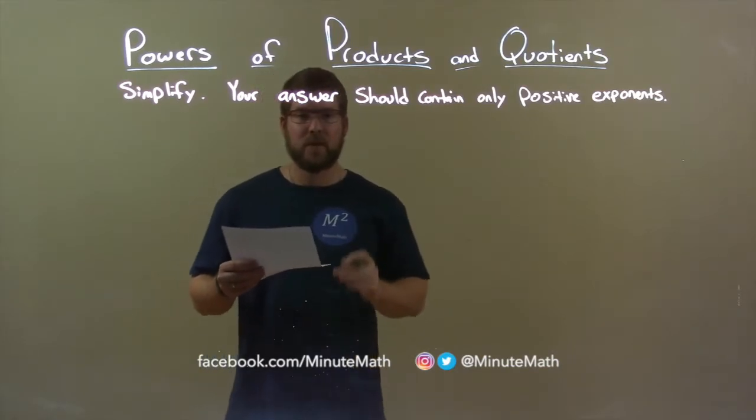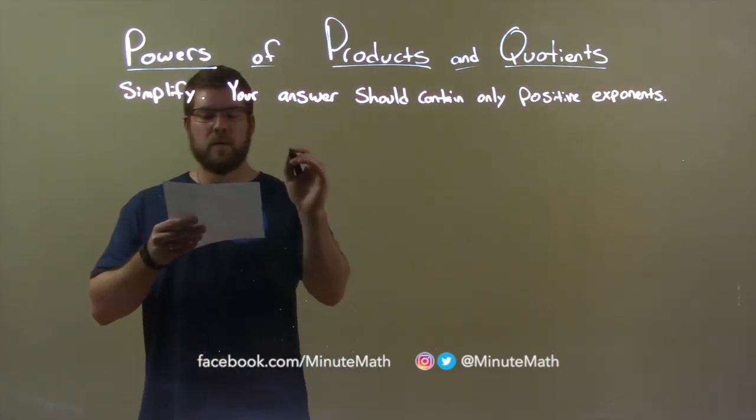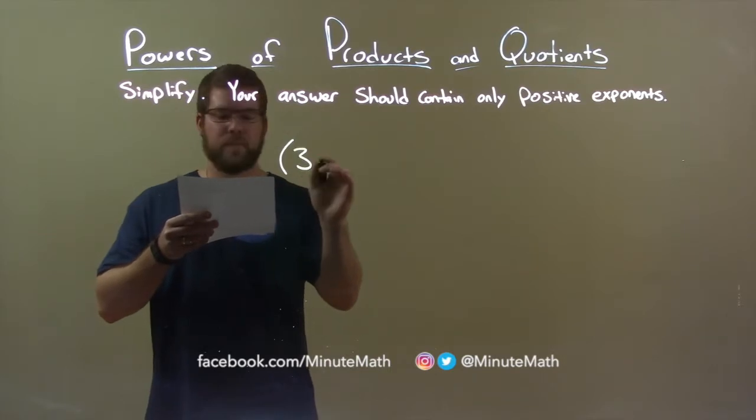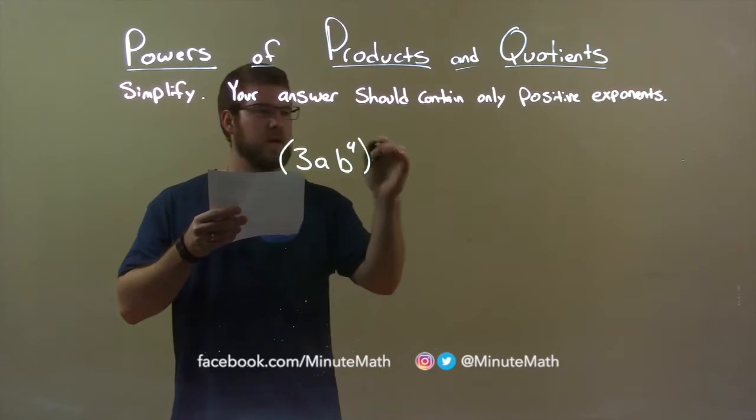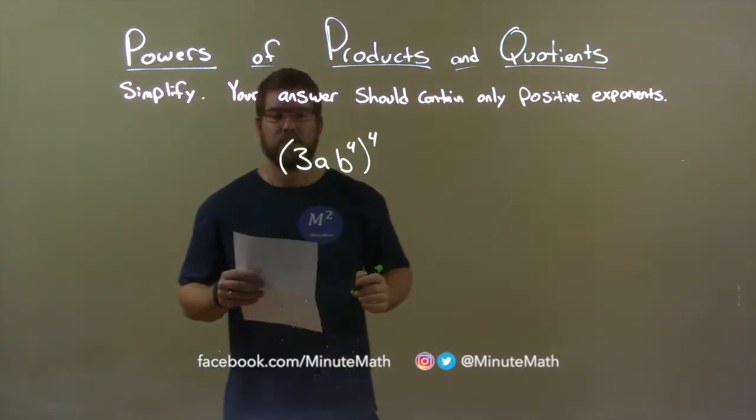So, if I was given this problem, 3ab to the 4th power, all raised to the 4th power. Well, we know this 3 is really 3 to the 1st power.